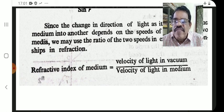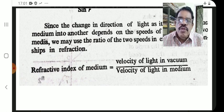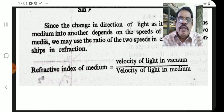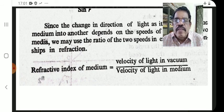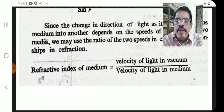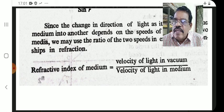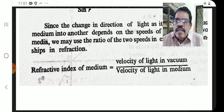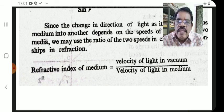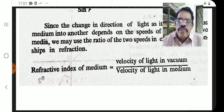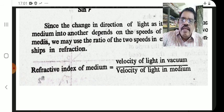The refractive index of a medium equals the velocity of light in vacuum divided by the velocity of light in the medium — that is c/v, where c is the velocity of light in vacuum and v is the velocity of light in the medium. So refractive index has two definitions: n = sin i / sin r, and n = c/v.